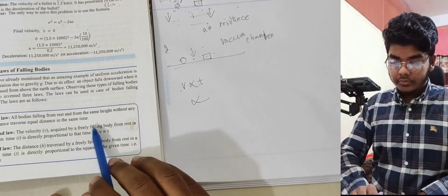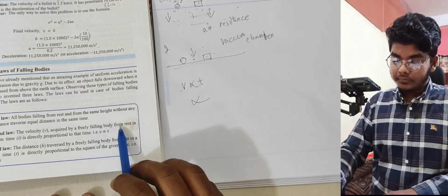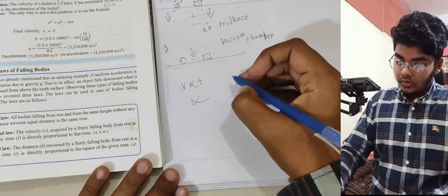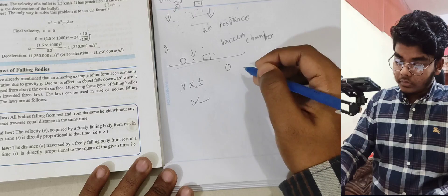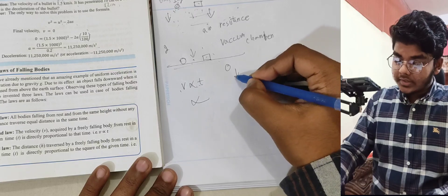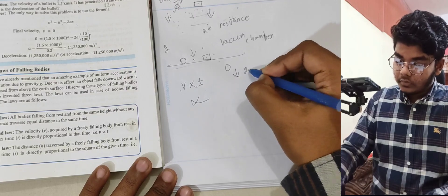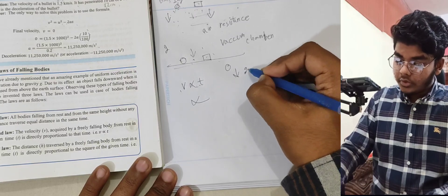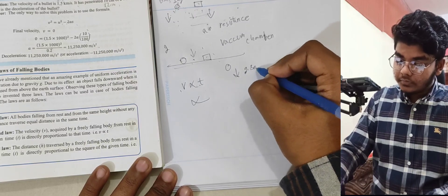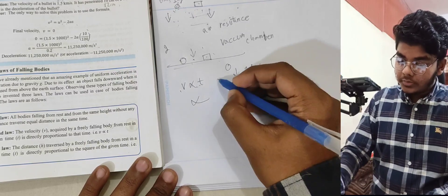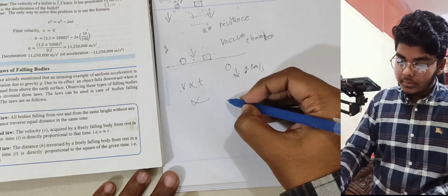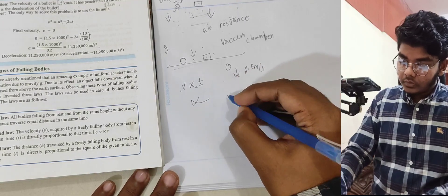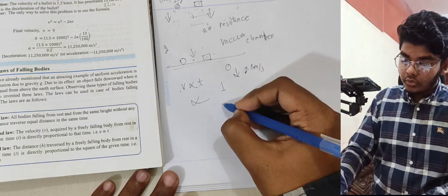The velocity acquired by a freely falling body increases at 9.8 meters per second every second. In the first second it reaches 9.8 m/s, and in the second second it reaches 19.6 m/s.